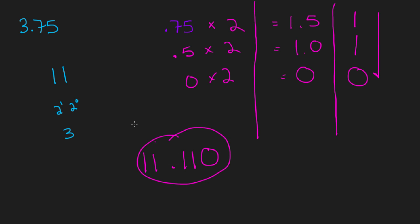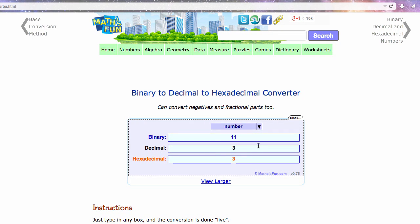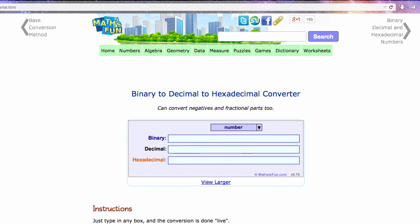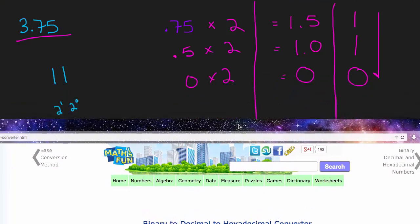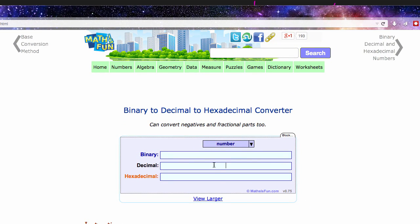Now what I can do is put a link in the description, and this is a decimal fractional capable converter from decimal to binary. And if I plug in 3.75 here, you can see that indeed we have 11.110.